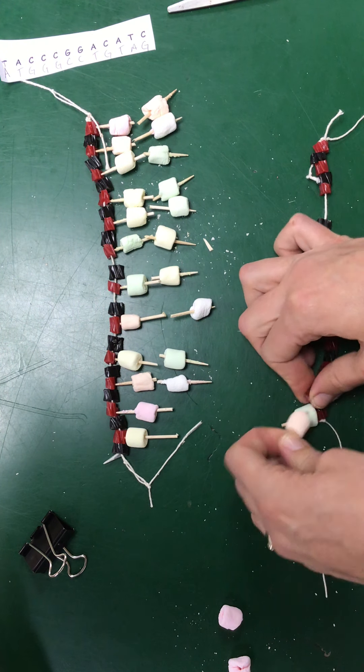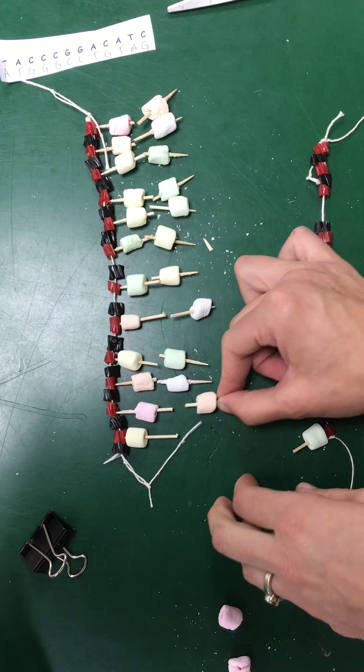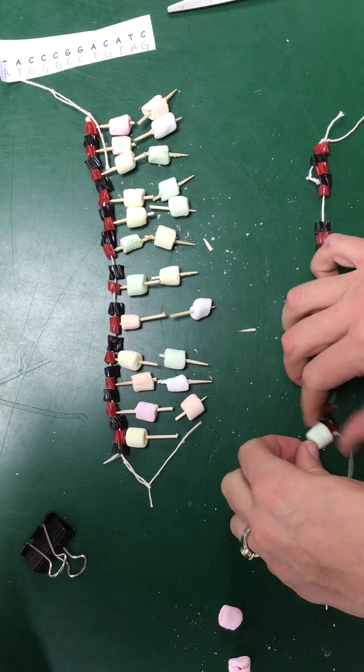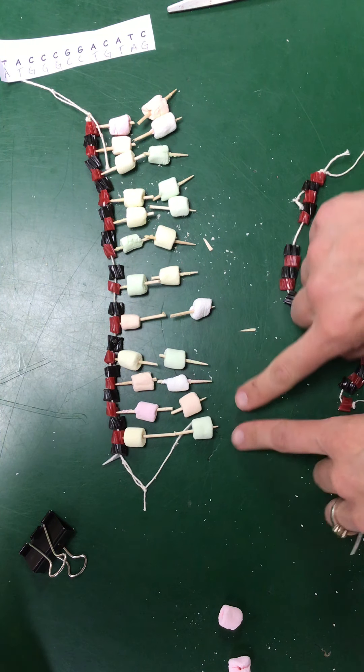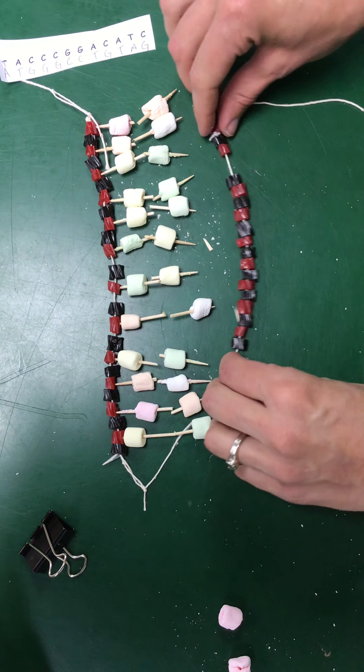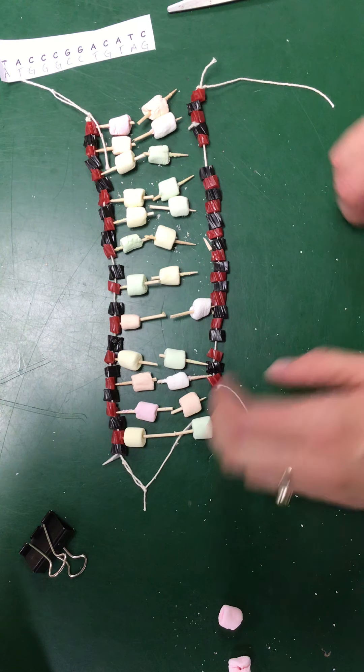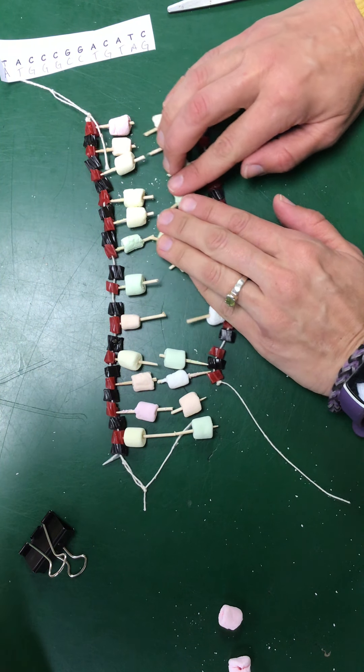Now we have a T. T can still go to A and then the C can go to a G. So now we have this whole part here, which then they bond back to a backbone and we take these off.